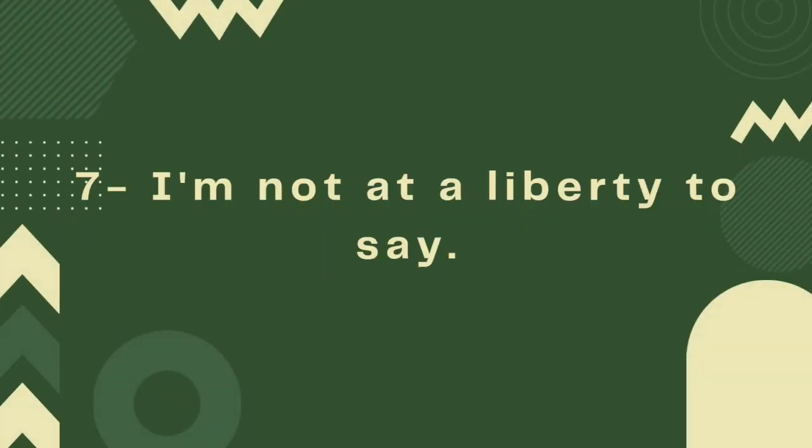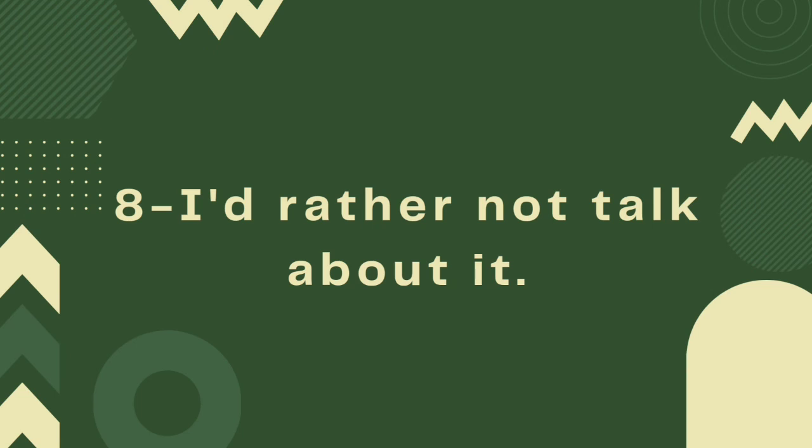Number seven is 'I am not at liberty to say.' Agar aapko us baat ko batane ki ijaazat nahi hai, to phir aap is sentence ka istamal kar sakte hain. Number eight is 'I'd rather not talk about it.' Ye ek aur polite tareeqa hai jismein aap us wakt us baat ko taal sakte hain — ke main abhi is baare mein baat nahi karna chahta hoon.